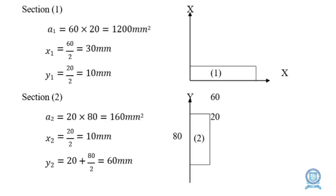For section 2, the length is 20 and the breadth is 80, so a2 = 20 × 80 = 1600 mm². The x2 value = 20/2 = 10 mm. For y2, we need to add the base height of 20 mm: y2 = 20 + 80/2. The base rectangle of height 20 must be added, so y2 = 20 + 40 = 60 mm.